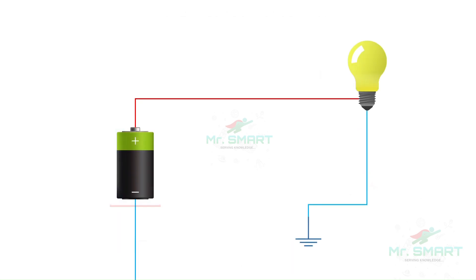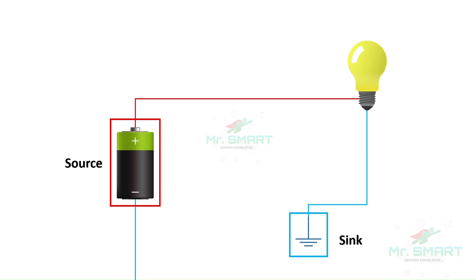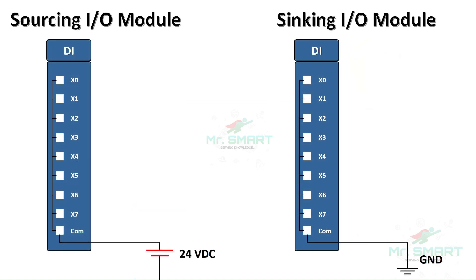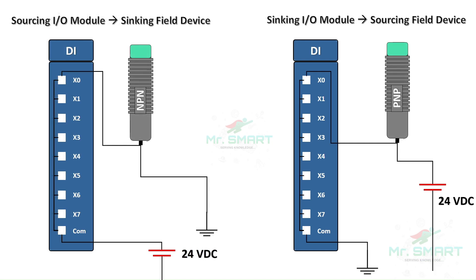So it's crucial to make sure the sourcing and sinking configurations are correct. Let's quickly summarize the key points: Source provides current; sink provides the ground path for current to flow. In a sinking I/O module, the module provides the ground. In a sourcing I/O module, the module provides the current. A sourcing field device must connect to a sinking I/O module. A sinking field device must connect to a sourcing I/O module. Mismatching sourcing and sinking devices with I/O modules can cause circuit failures.